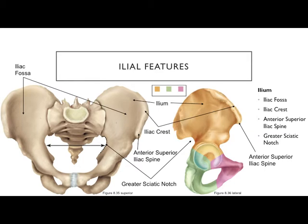The more posterior region of the os coxa is the ischium. A memory trick: 'squishy ischie' to remember it's the back/sitting region. Within the ischium there's an ischial spine — a thin bony projection. On either side of it, forming an M-shape, are the greater sciatic notch (bigger) and the lesser sciatic notch (smaller) — just like greater and lesser tubercles we saw on the humerus.